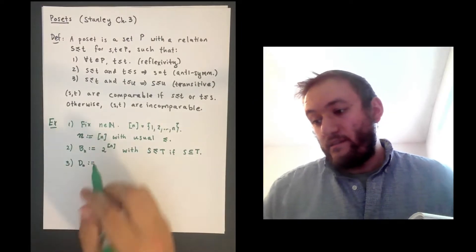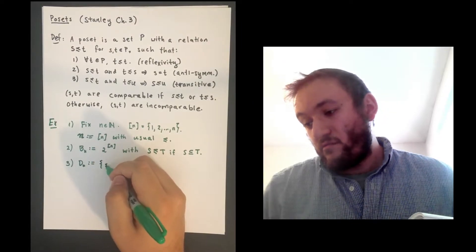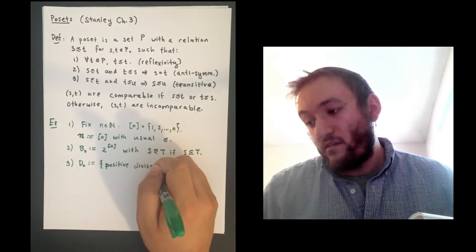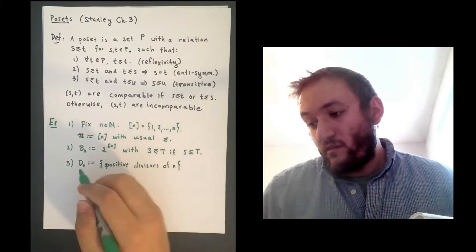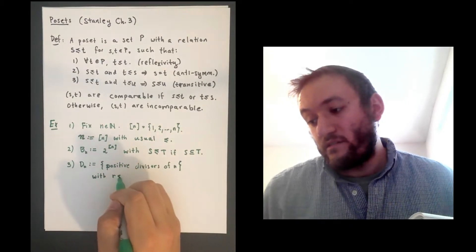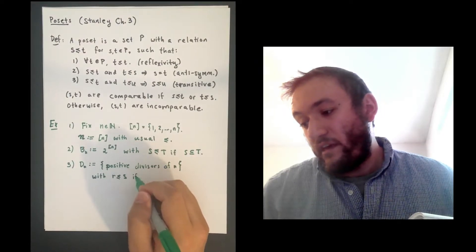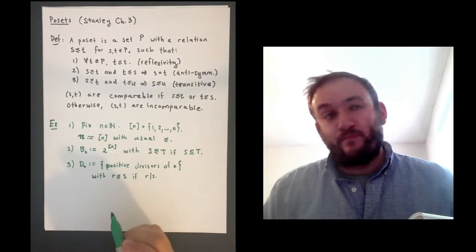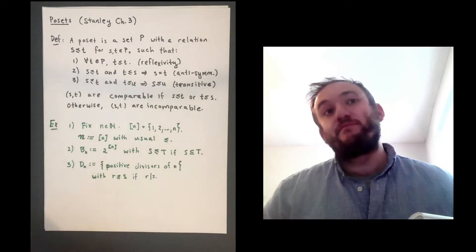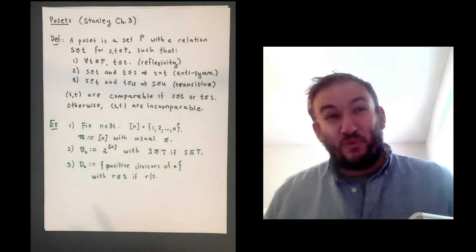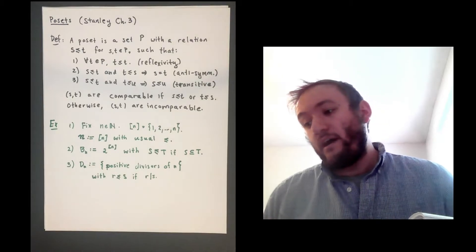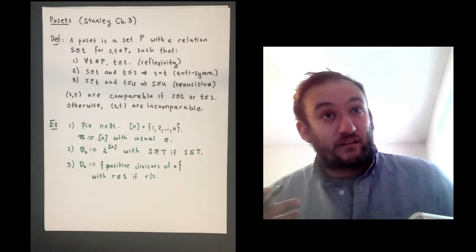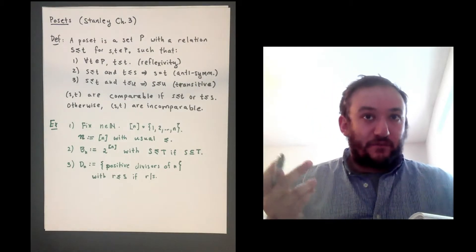D_n is defined as the set of positive divisors of n, with r less than or equal to s if r divides s. For instance, if you have 12, then you would have 1, 2, 3, 4, 6, 12 as the elements of the poset. You would have 2 and 3 incomparable, 2 is less than or equal to 4, 4 and 6 are incomparable, but 4 is less than or equal to 12 and 6 is less than or equal to 12.